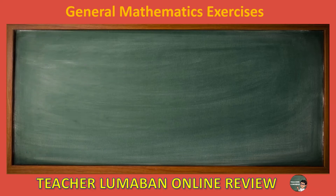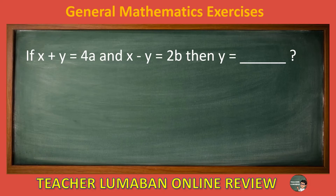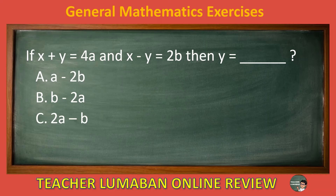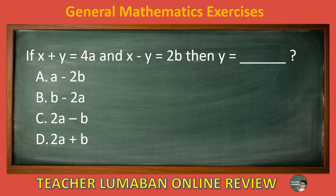If x plus y equals 4A and x minus y equals 2B, then y equals blank. Letter A: A minus 2B. Letter B: B minus 2A. Letter C: 2A minus B. Letter D: 2A plus B. Choose the suitable answer in 5 seconds. 5, 4, 3, 2, 1. The correct answer is Letter C: 2A minus B.